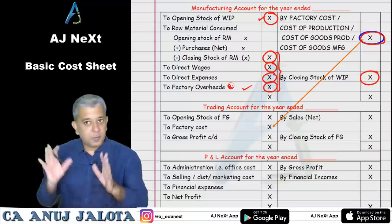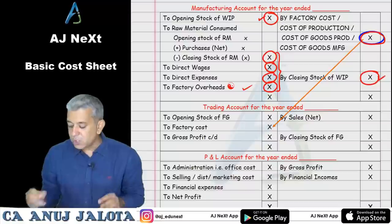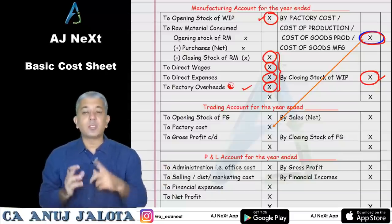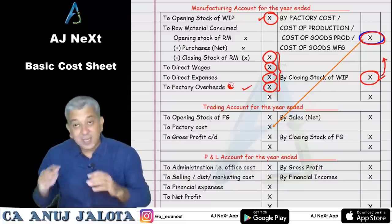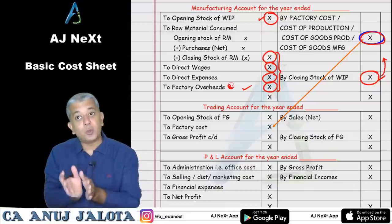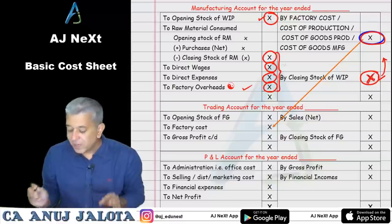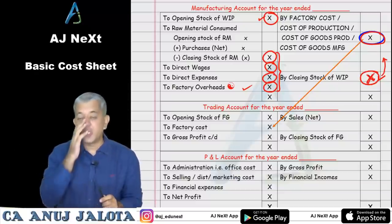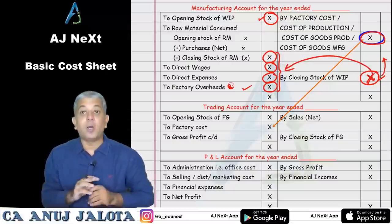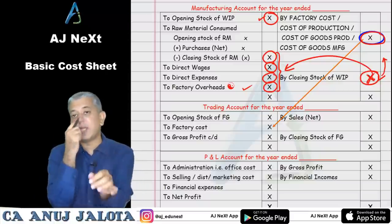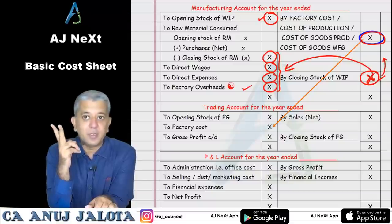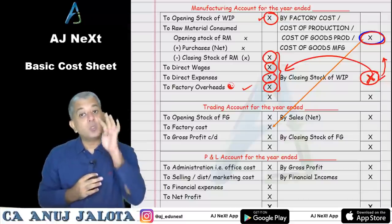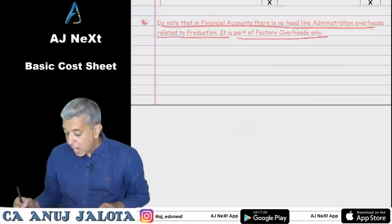WIP stock is always valued at cost — cost means: direct material + direct labor + direct expenses + factory overheads. The same is true in costing, but the difference is the meaning of factory overheads: in cost accounts, factory overheads exclude administration overheads related to production; in financial accounts, factory overheads include that. Everything will start to connect now.